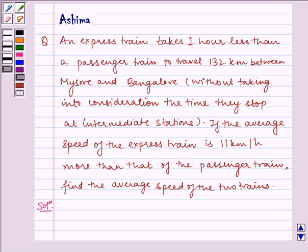Hello and welcome to the session. Let us understand the following problem today. An express train takes one hour less than a passenger train to travel 132 km between Mysore and Bangalore without taking into consideration the time they stop at intermediate stations. If the average speed of the express train is 11 km per hour more than that of the passenger train, find the average speed of the two trains.